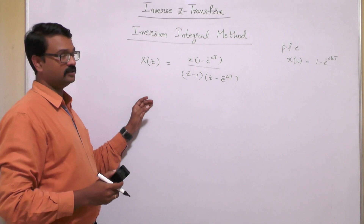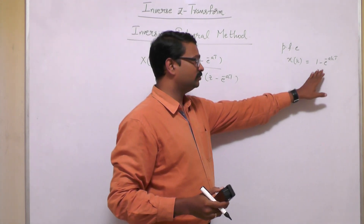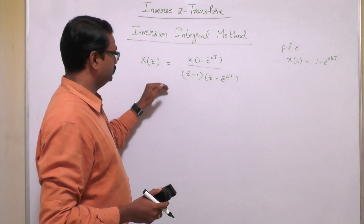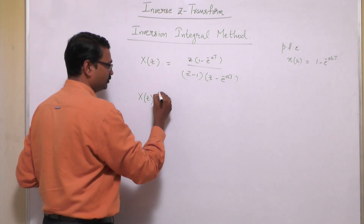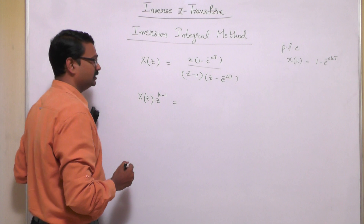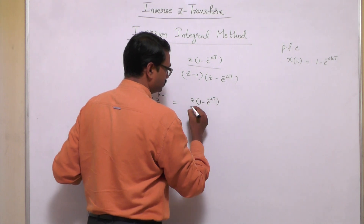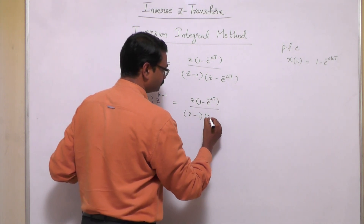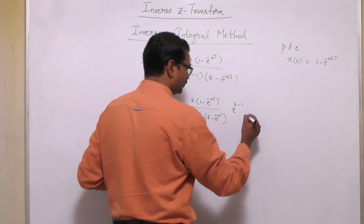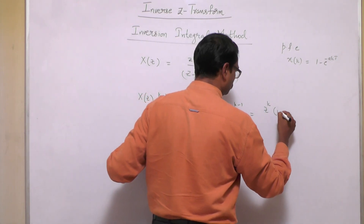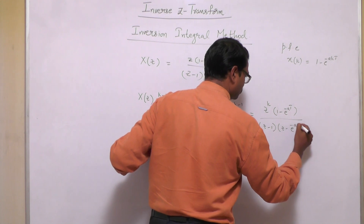Any of the four different methods used for inverse Z-transform must give the same result. Therefore X(k) = 1 - e^(-akT) must be obtained when using this inversion integral method. For this, we note that X(Z)·Z^(k-1) equals Z^k·(1 - e^(-aT)) / [(Z-1)(Z-e^(-aT))].